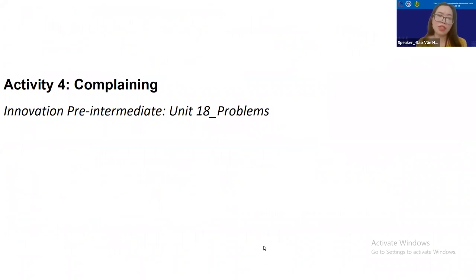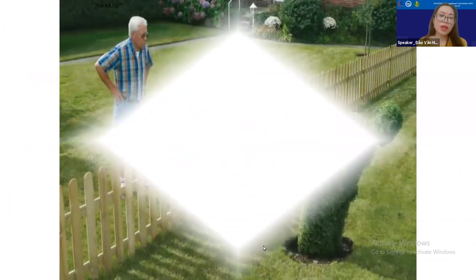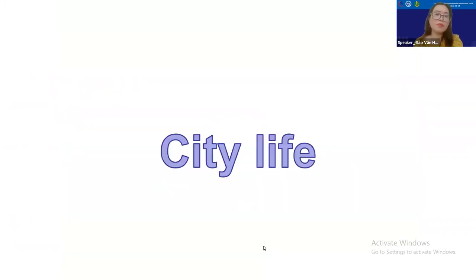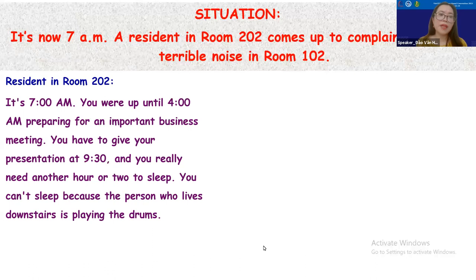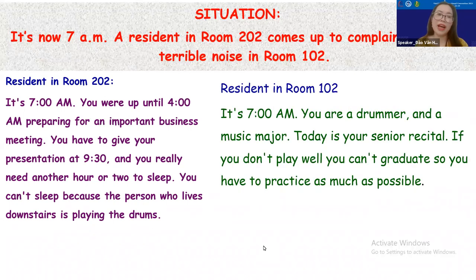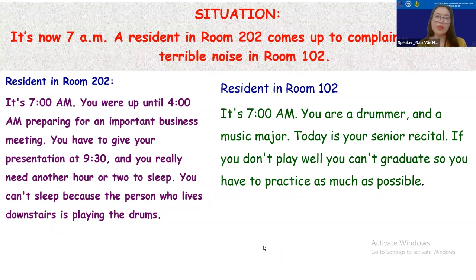This next activity focuses on the speech act of complaining. The topic is about problems. The situation is that it's 7am, and a resident from room 202 comes to complain about the terrible noise from room 102. There are two role cards for student number one and student number two that you can see on the screen. The students make a conversation to discuss the problem — one person complains about the noise in room 102, and the other explains their situation and asks for some sympathy.